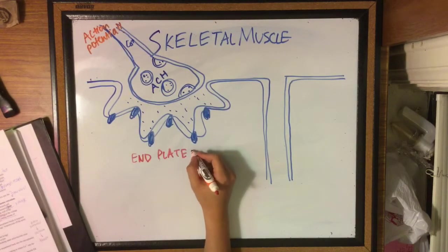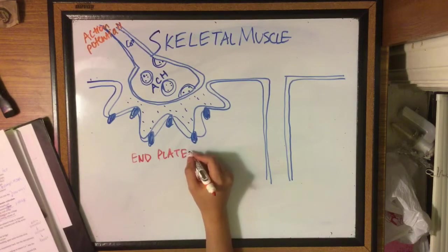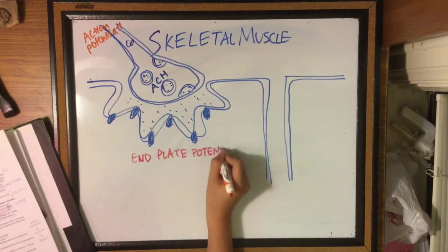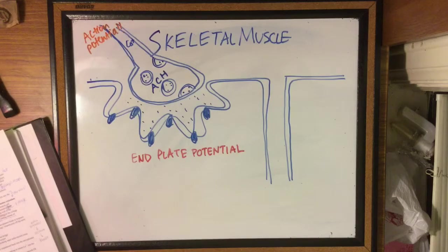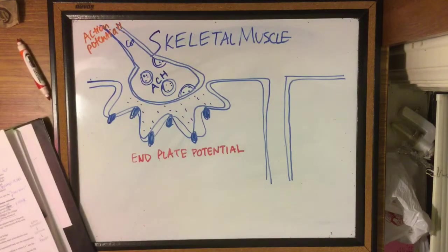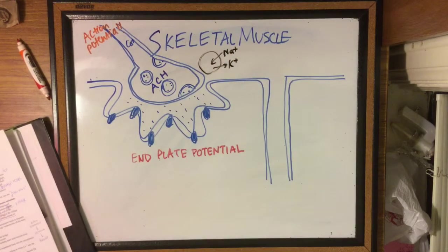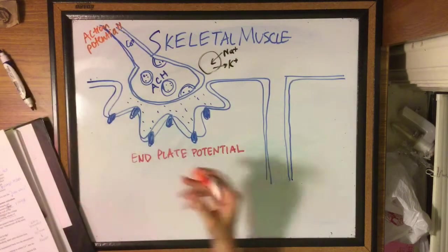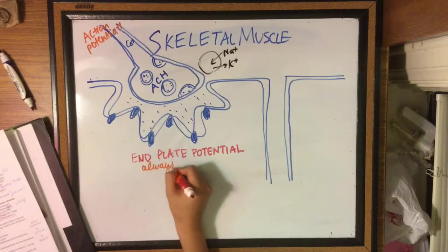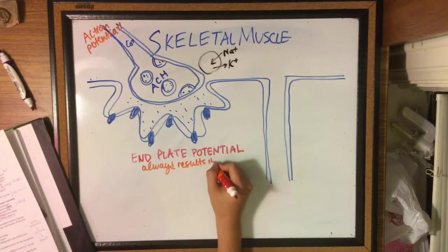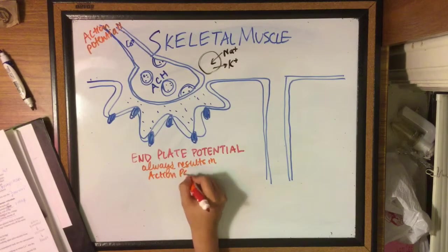Then it binds to these nicotinic receptors which are ionotropic on the motor end plate. The nicotinic cholinergic channels open, allowing sodium and potassium channels to open, which results in a graded potential called the end plate potential. It's graded but it always results in an action potential.